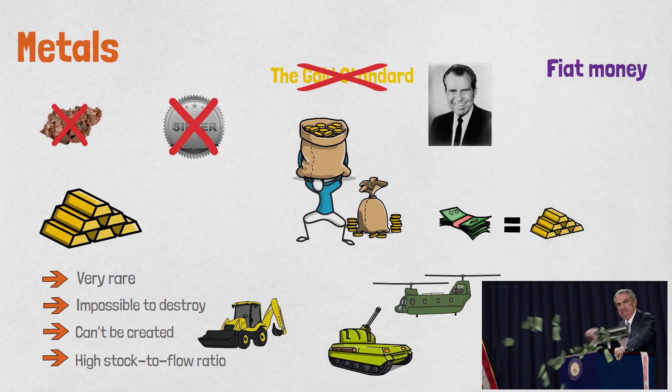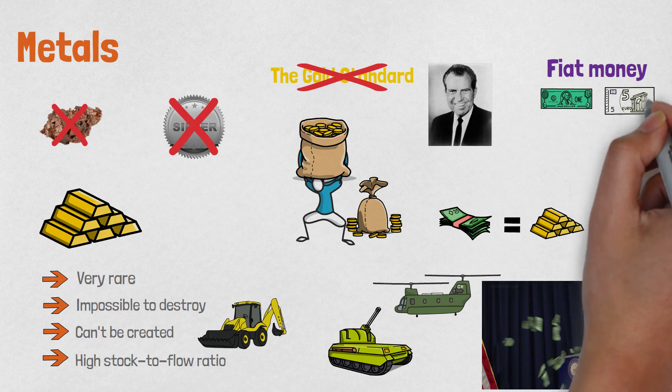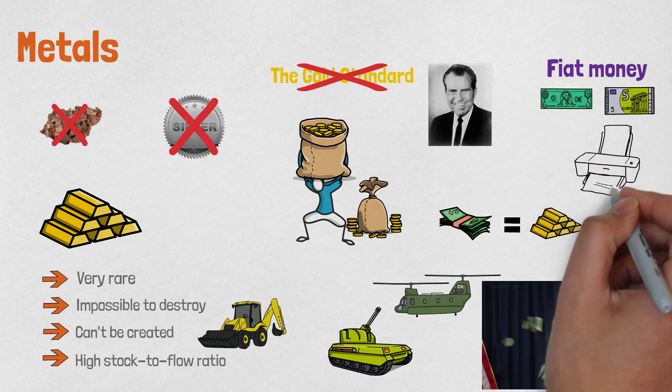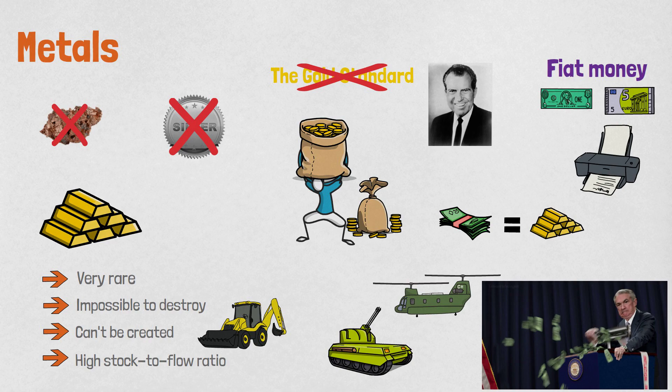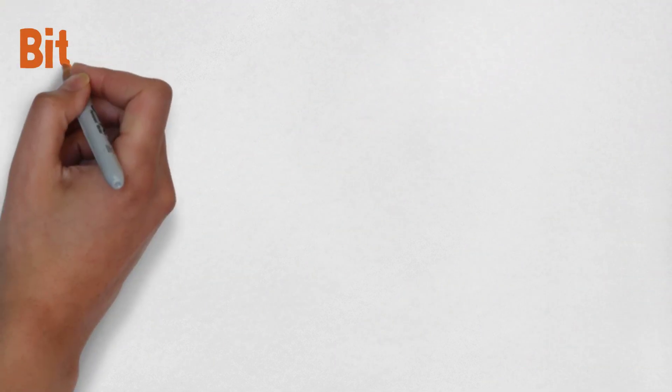Fiat money, which is the name of the government currencies such as dollars, euros or yen, are easily produced, which makes our economy very unstable because the purchasing power of currencies is decreasing. And that is where Bitcoin's story begins.